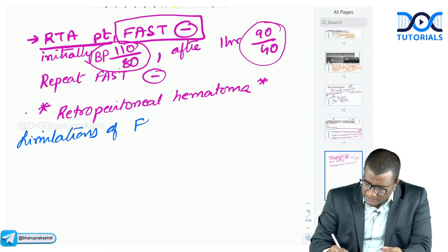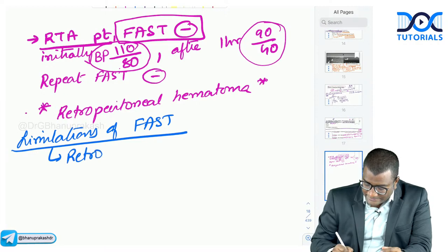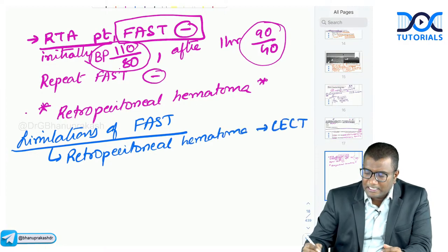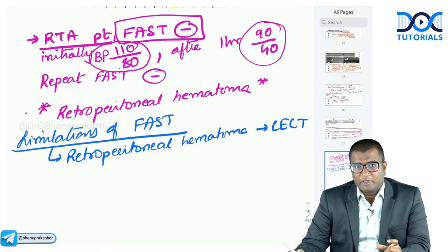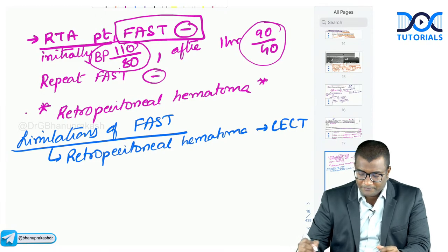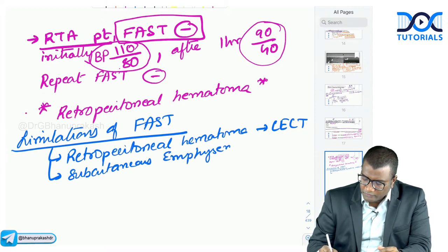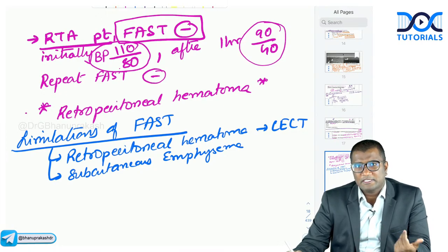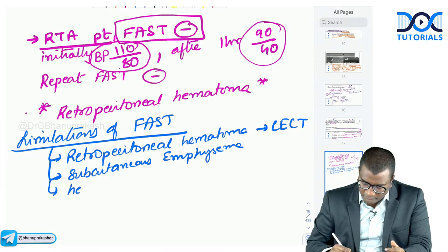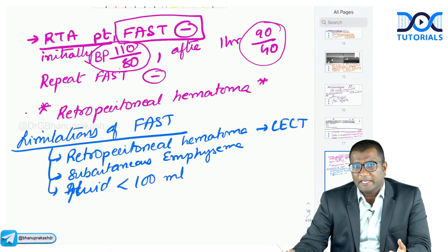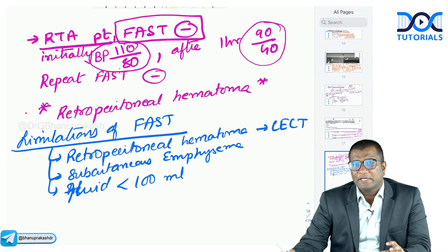Limitations of FAST: it cannot detect retroperitoneal hematoma (can detect hemoperitoneum but not retroperitoneal collections); it cannot be used when there is subcutaneous emphysema on the abdominal wall because air blocks ultrasound beam penetration; and it cannot detect fluid less than 100 ml — the collection may be too small early after trauma. Repeat FAST after some time when collection exceeds 100 ml.